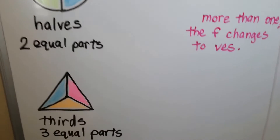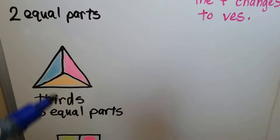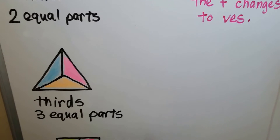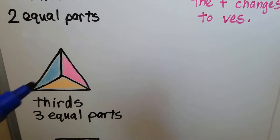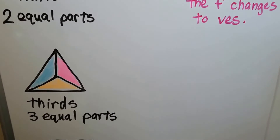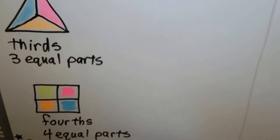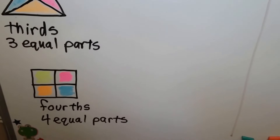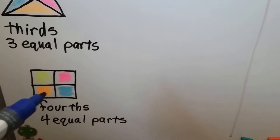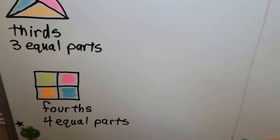Here we have a triangle. It's cut into thirds — split into three equal parts, and each part is the same size. We also have a square cut into fourths, which means it has four equal parts.